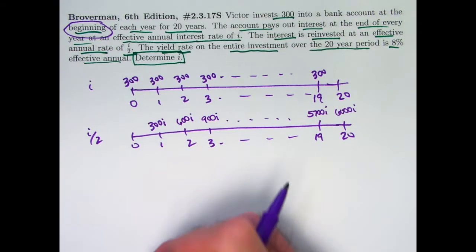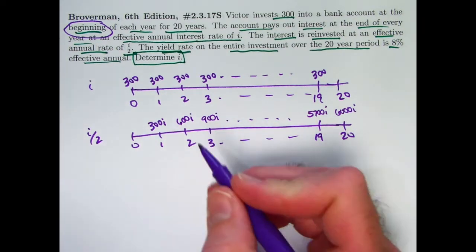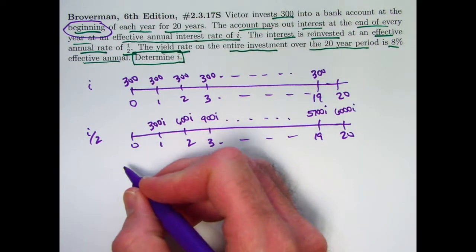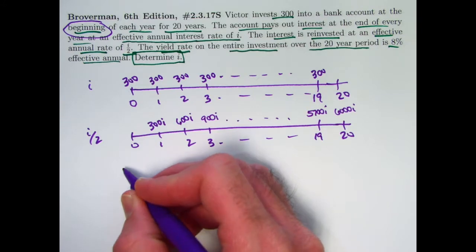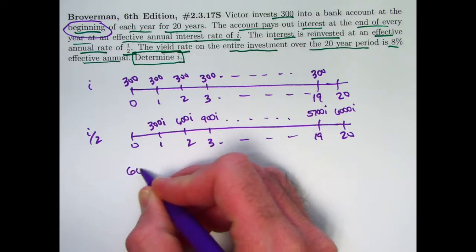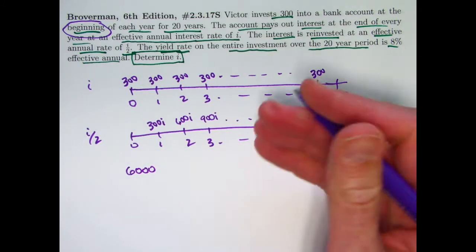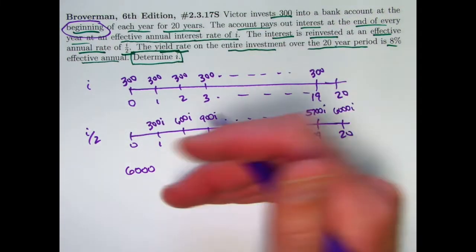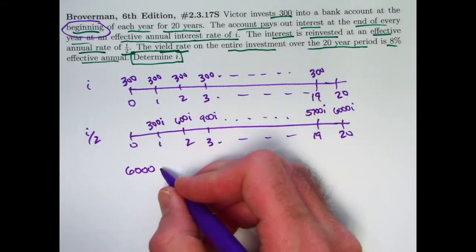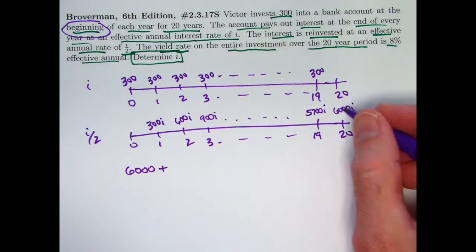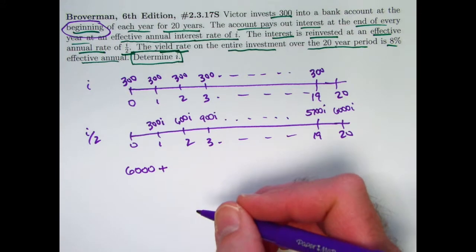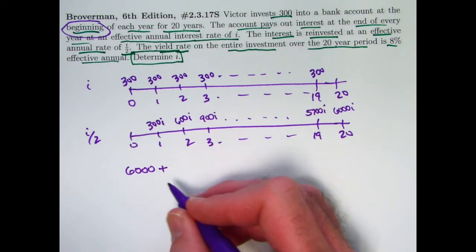Let's write down an expression representing the future value at time 20 of this entire stream of money here in these two accounts. We've got, first of all, the 6000 coming from the first account, 300 times 20. We reinvested the interest, so we don't think of any interest as being in that account. We also reinvest the interest at time 20 at that last amount there, 6000i. So we have 6000 in the first account.